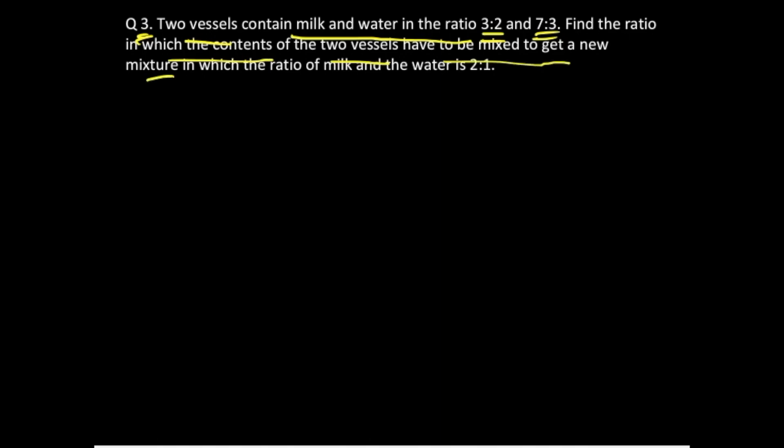In the new mixture, the ratio of milk and water is 2:1. This question involves ratio of ratios because this particular ratio is of milk and water for the first vessel and this is for the second vessel, and they are mixed in a certain ratio. This involves type 3, which is ratio of ratios.